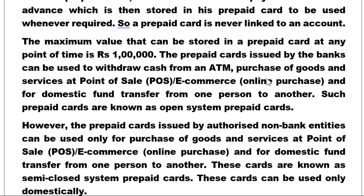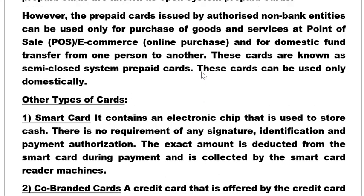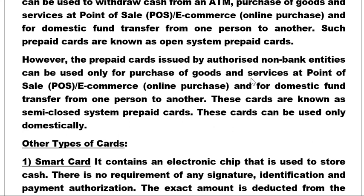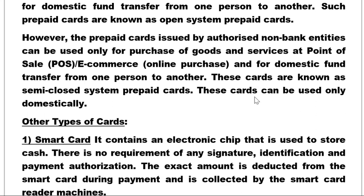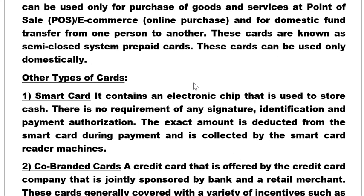The main difference between open system and semi-closed system prepaid cards is that open cards are issued by banks, while semi-closed cards are issued by non-bank entities. Closed prepaid cards are limited to particular establishments only — for example, cards issued by petrol companies like HP that can only be used at those specific companies.